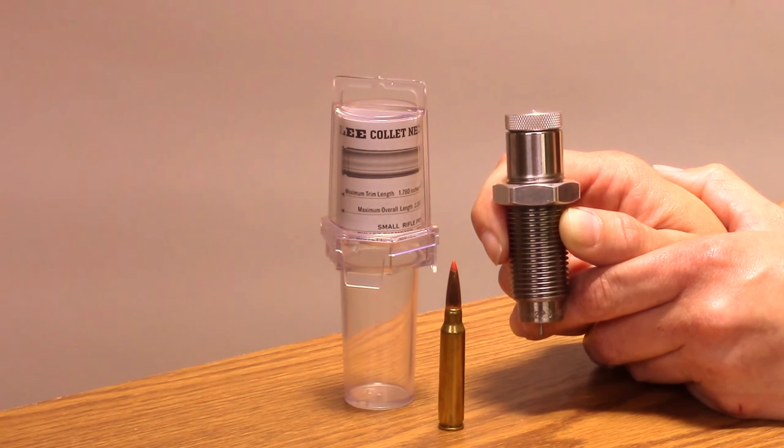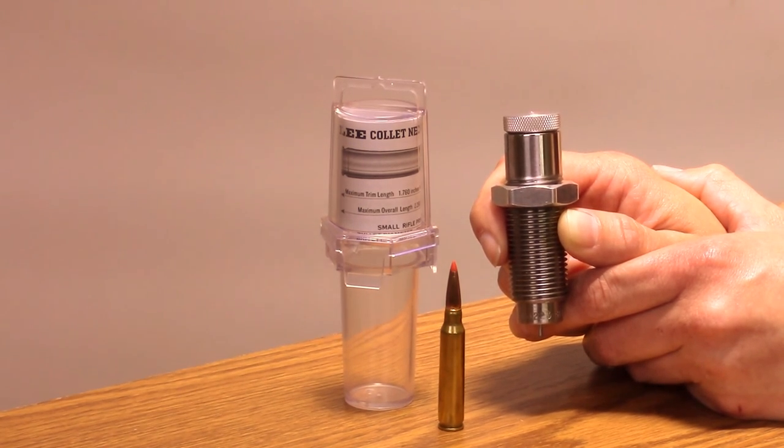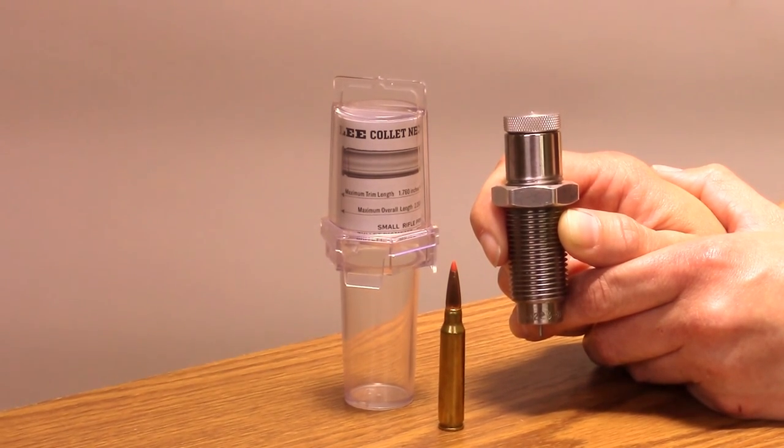Maximum accuracy is usually achieved by seating the bullet out far enough to touch or almost touch the rifling. This provides the shot start pressure normally supplied by the crimp.